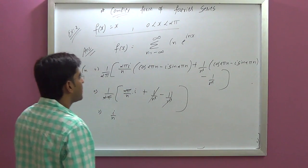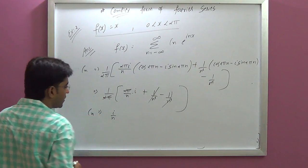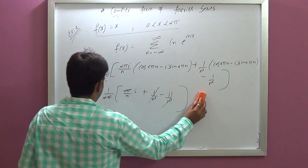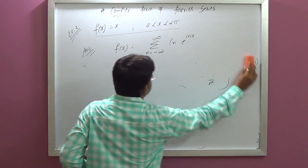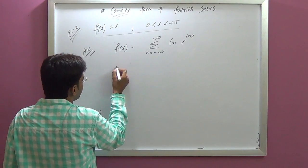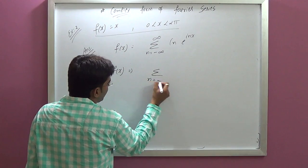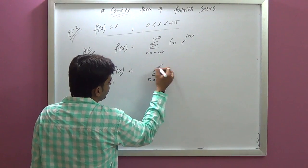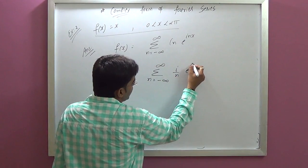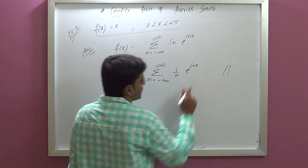Now, Cₙ equals i over n. The final Fourier series answer is the summation with Cₙ equals i over n, and e raised to inx. This is our final answer.